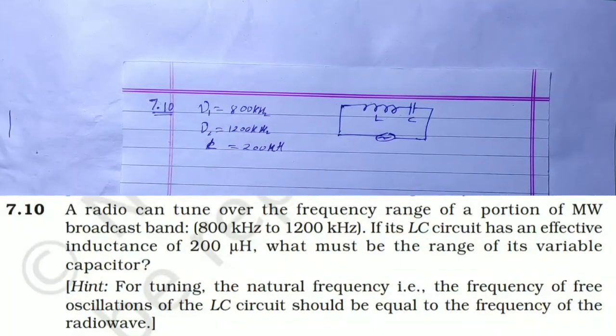NCERT Solution Chapter 7 Alternating Current Question No. 10. A radio can tune over a frequency range of portion of MW broadcast band 800 kHz to 1200 kHz if its LC circuit has an effective inductance of 200 microhenry. What must be the range of its variable capacitor?